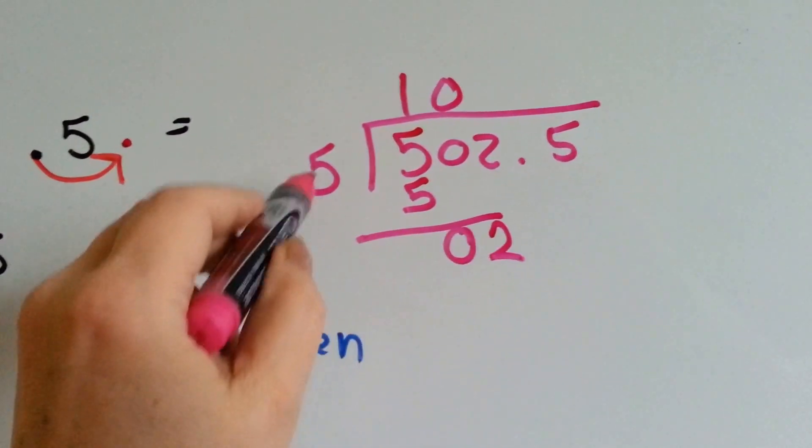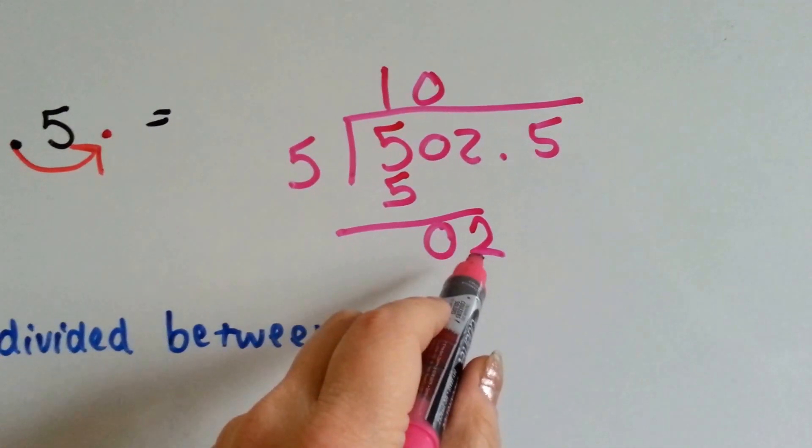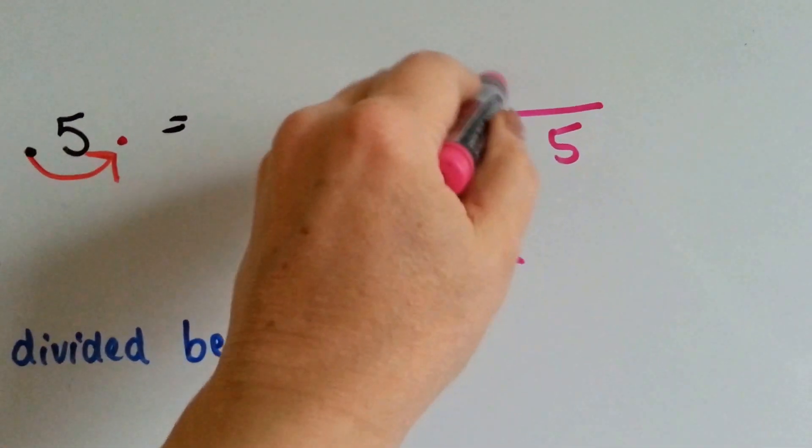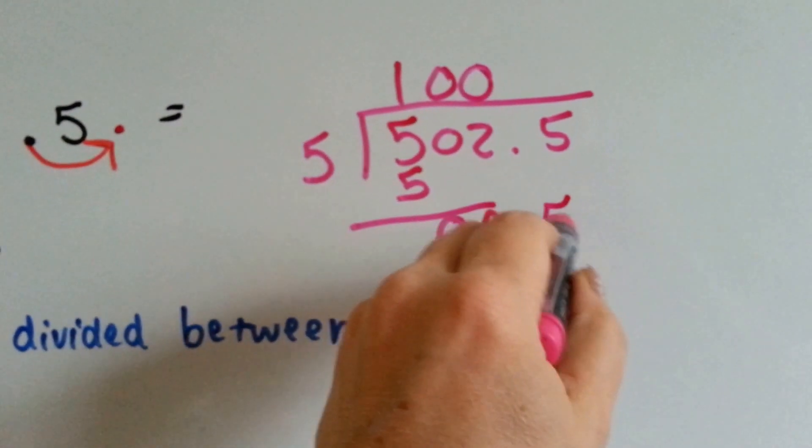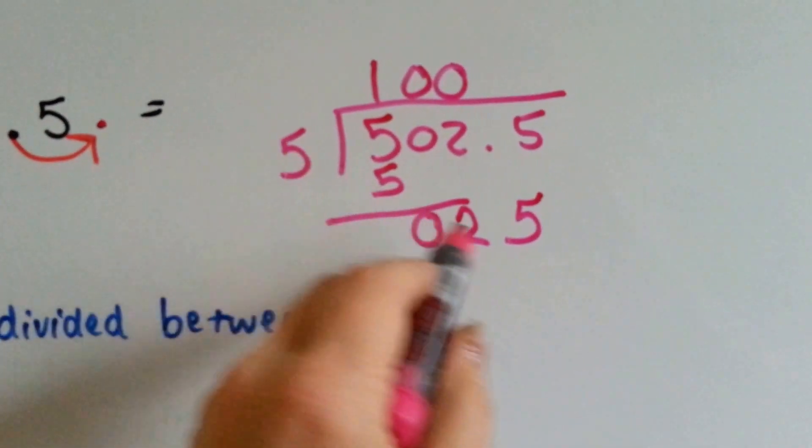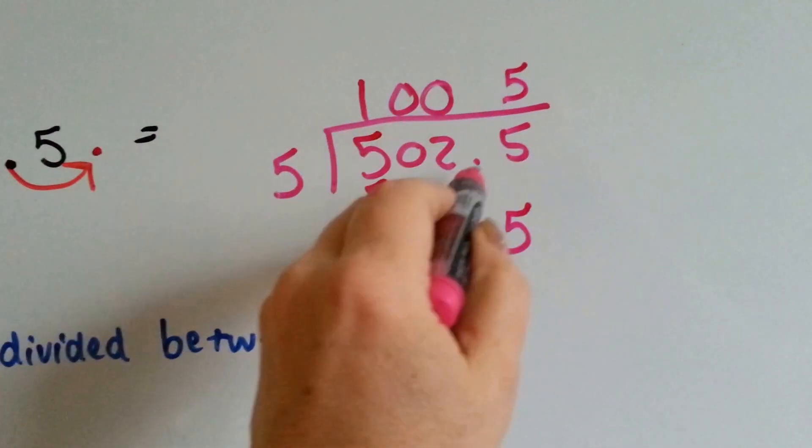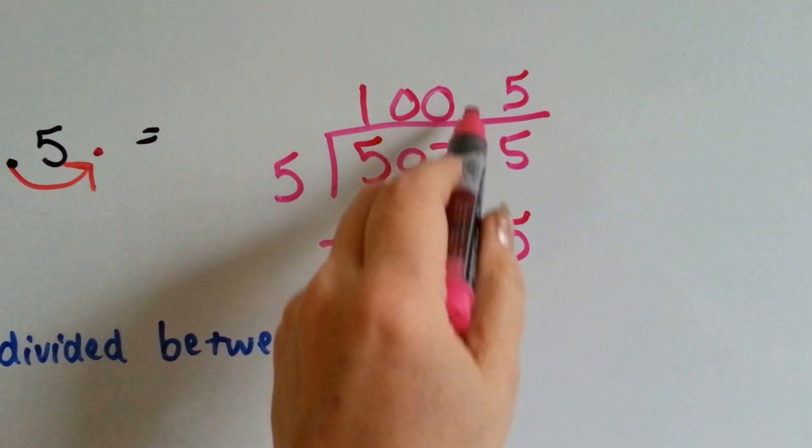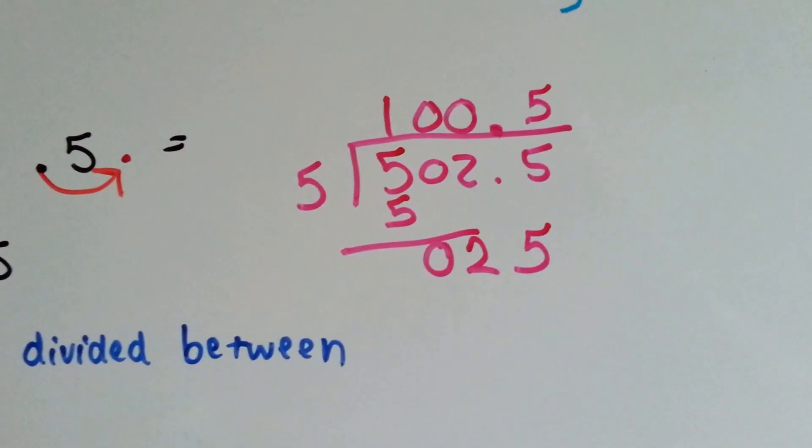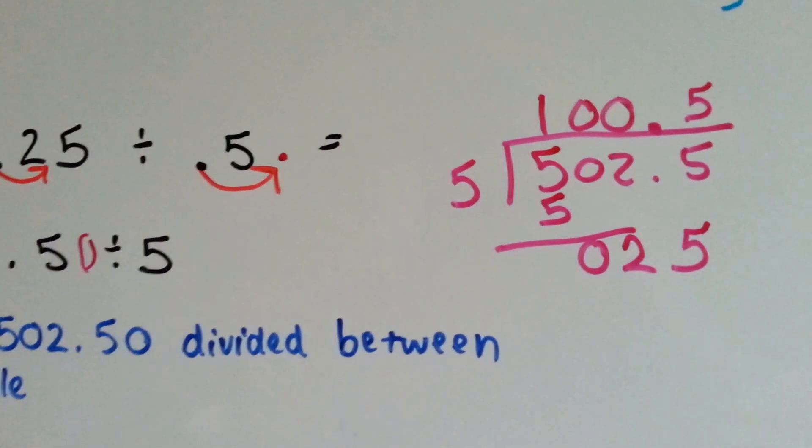Now, it's the two's turn to come down. How many fives fit into two? None. So we put another zero up here. Now, it's the five's turn to come down. How many fives fit into 25? Five of them. And we remember to put our decimal point directly above where it was in the dividend, and each person gets $100.50.